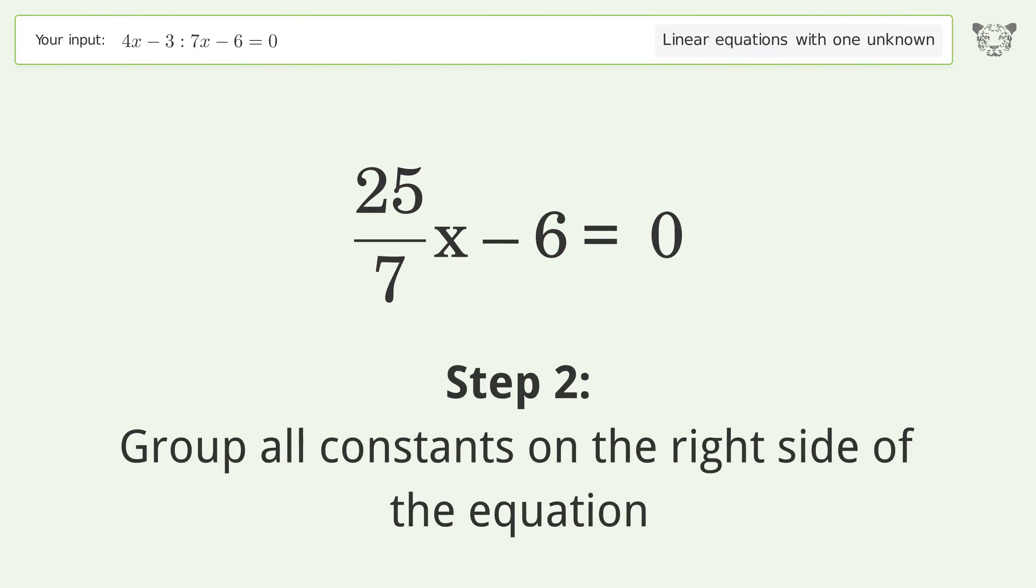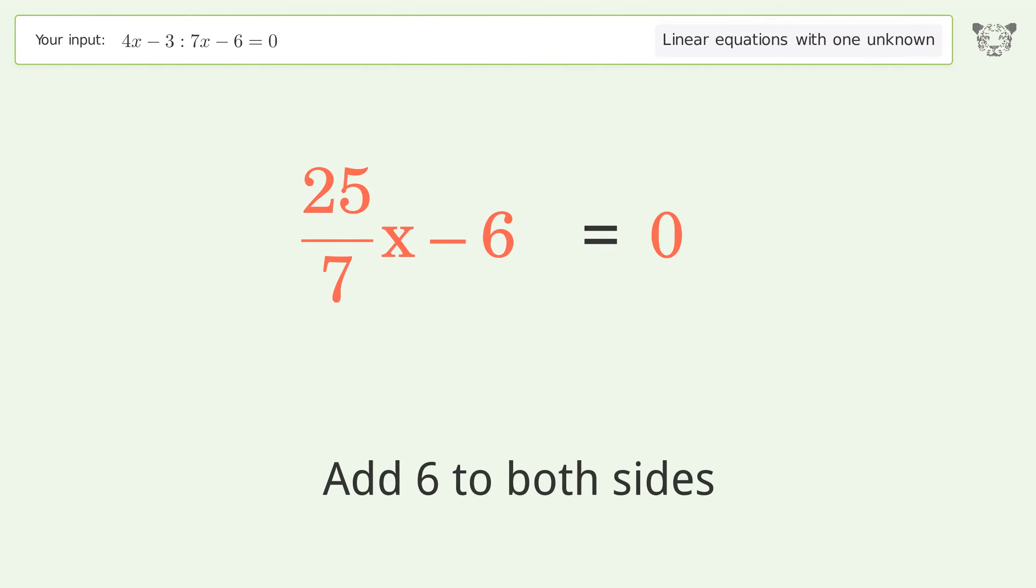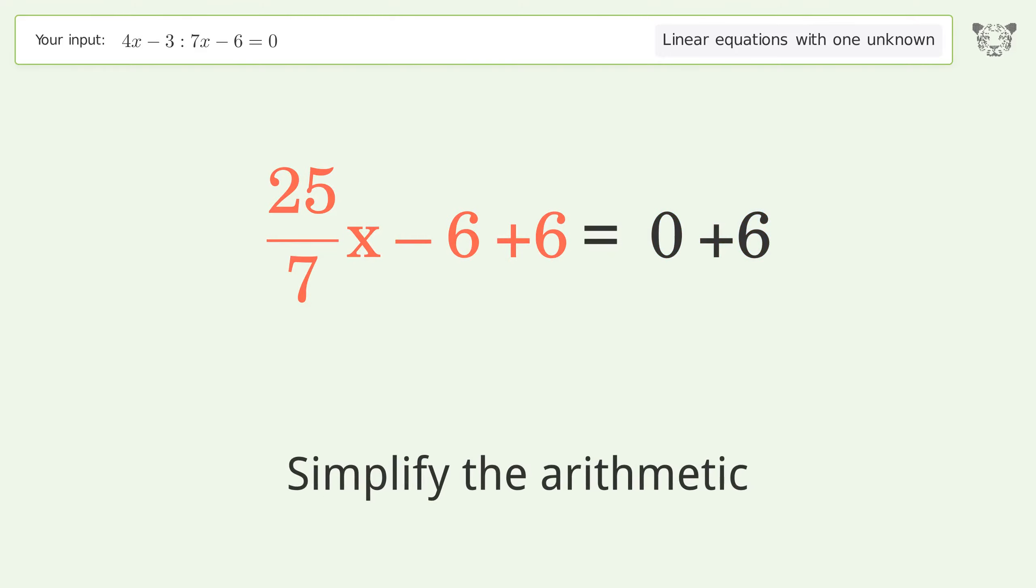Group all constants on the right side of the equation. Add 6 to both sides. Simplify the arithmetic.